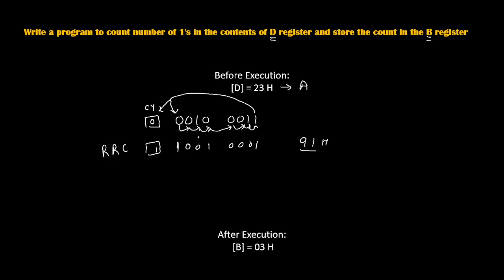91H with CY flag equal to 1. This is the technique we are going to use. We will rotate the D register's value 8 times. Why 8 times? Because we want to check all 8 bit positions. Therefore we will rotate 8 times and see how many times the carry has become 1. This technique we will use for writing this program.